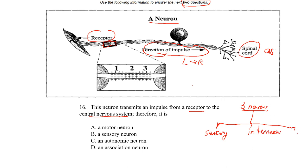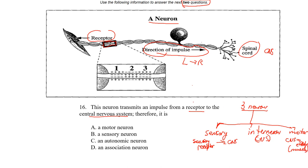The three neuron types are sensory, interneuron, and motor neuron. Make brief notes — a lot of times that extra effort will unlock information in your brain. Sensory neurons take messages or impulses from sensory receptors to the CNS. Interneurons are found in the CNS; they coordinate and determine the type of response to send out. Motor neurons take messages or impulses from the CNS to the effectors, often a muscle.